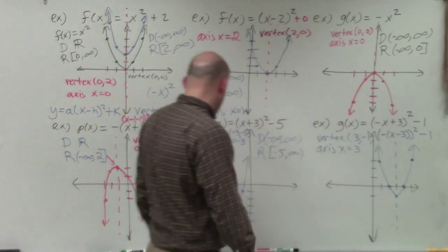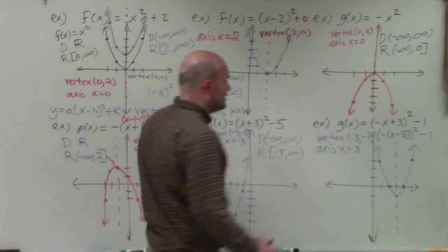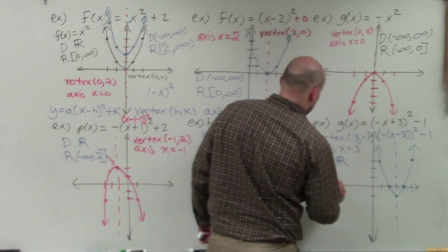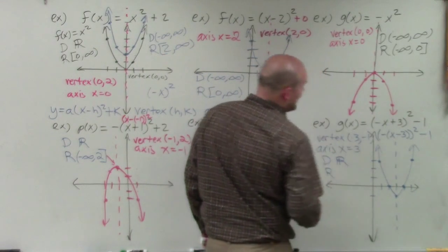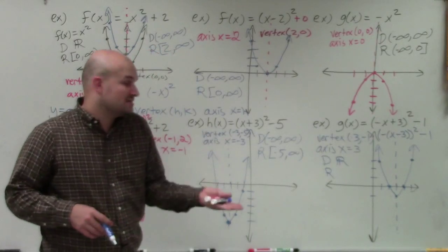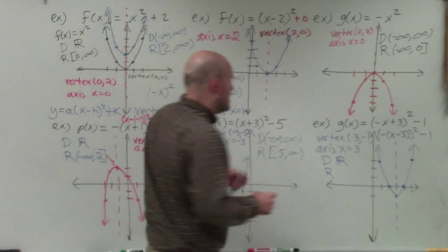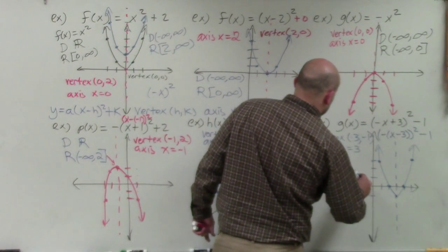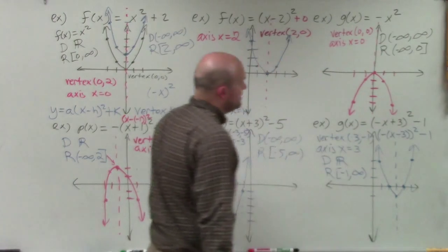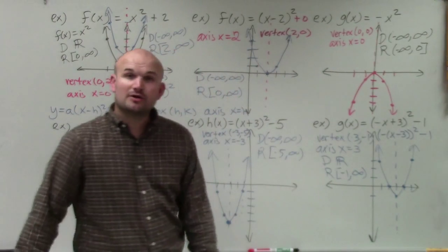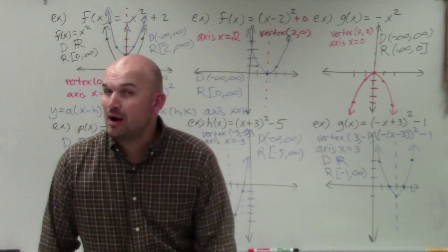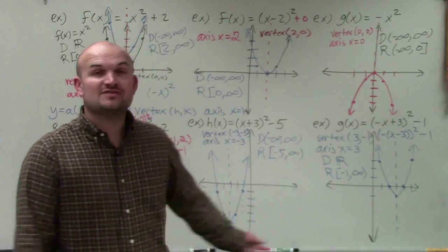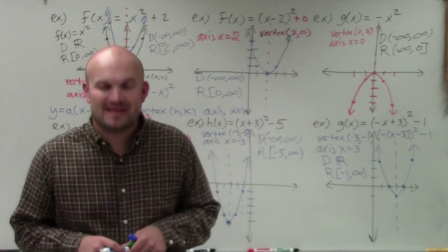For domain and range: domain is all real numbers. The range — the lowest this graph goes on the y-axis is negative 1, and the highest is infinity. So the range is negative 1 to infinity. That is how you graph a quadratic in vertex form and determine the domain and range. Thanks.